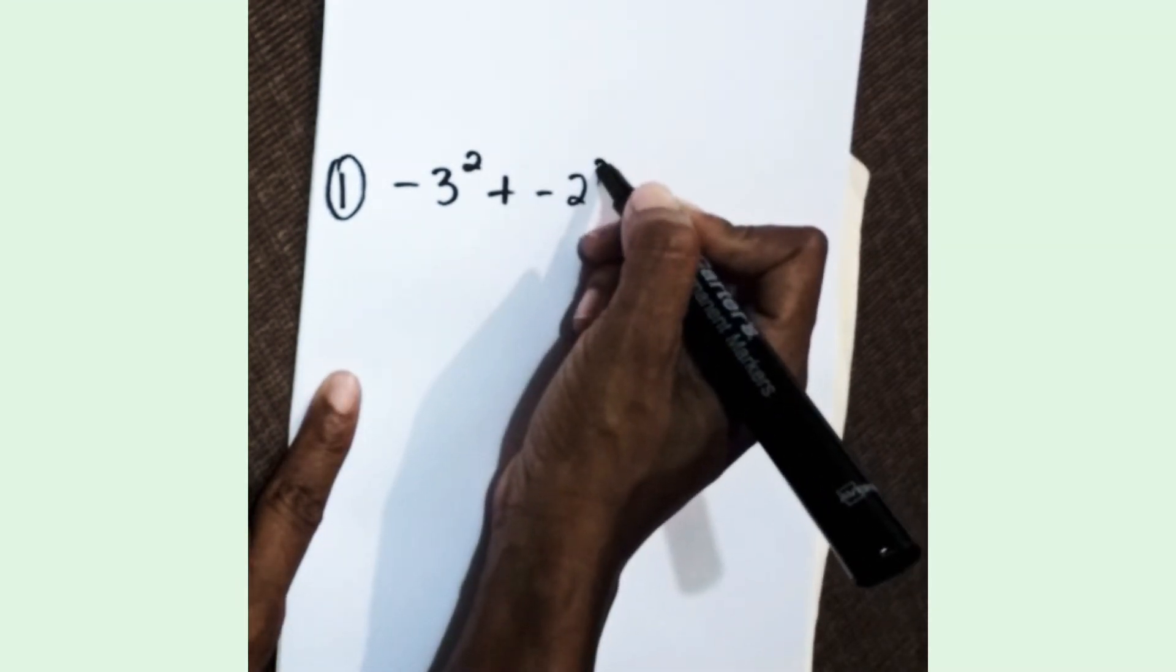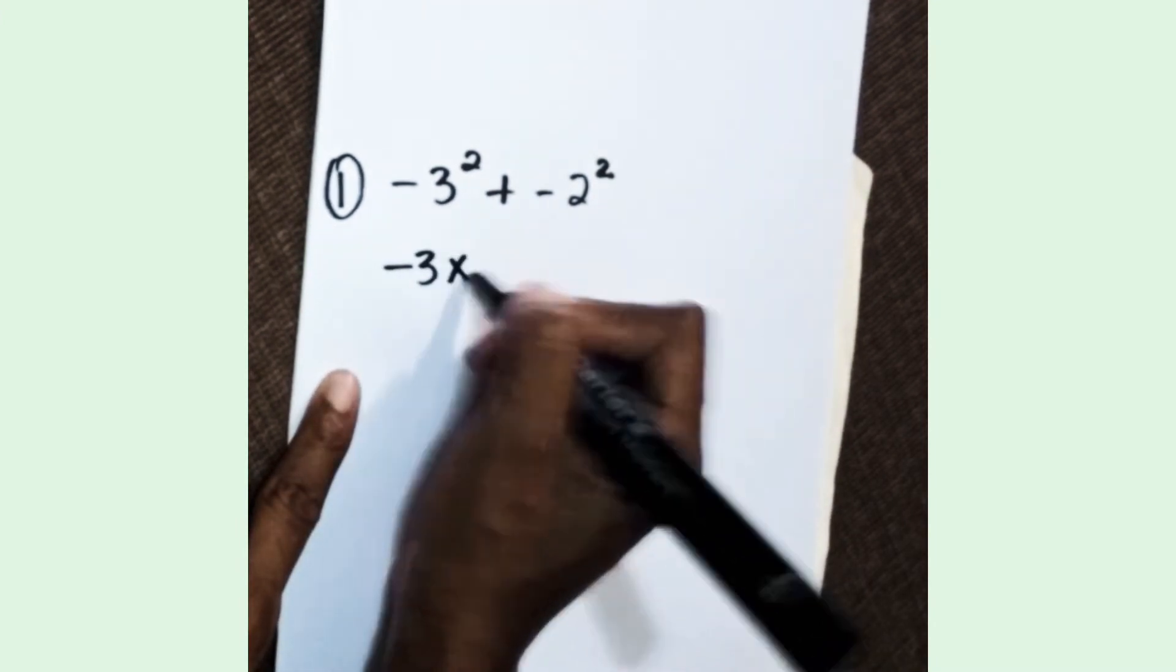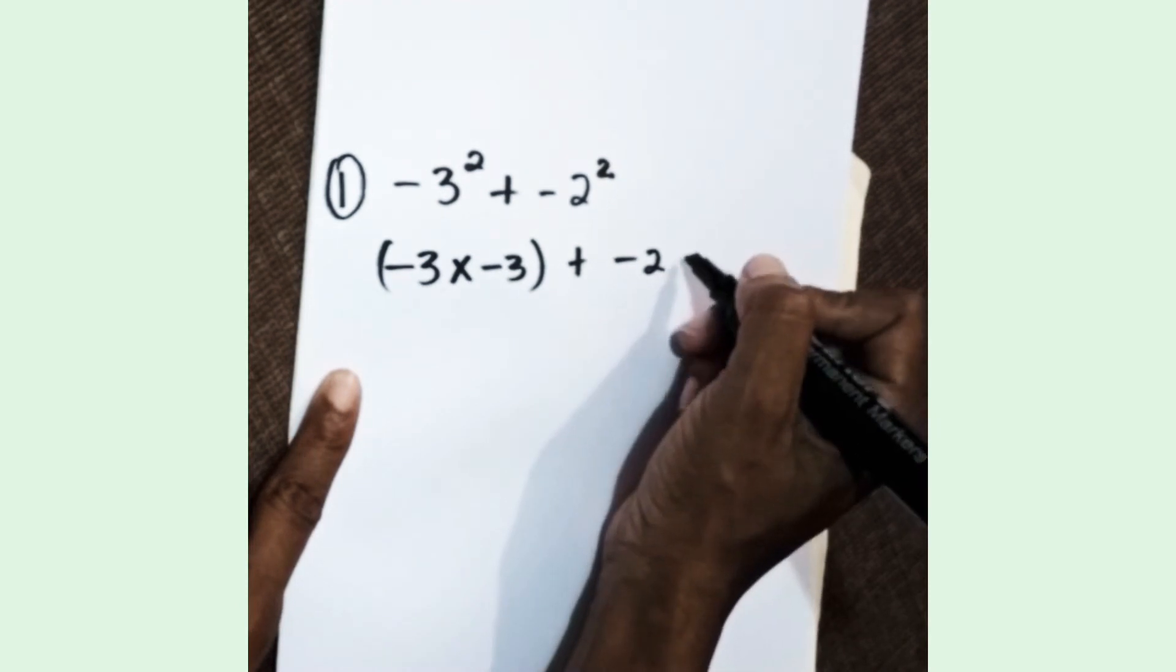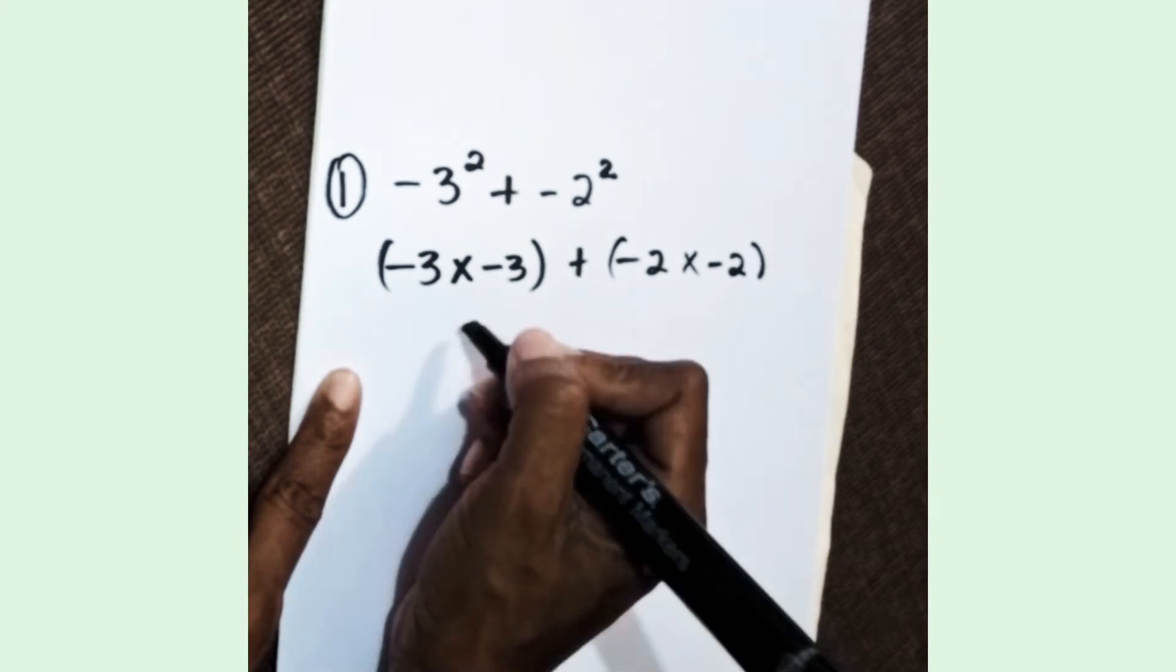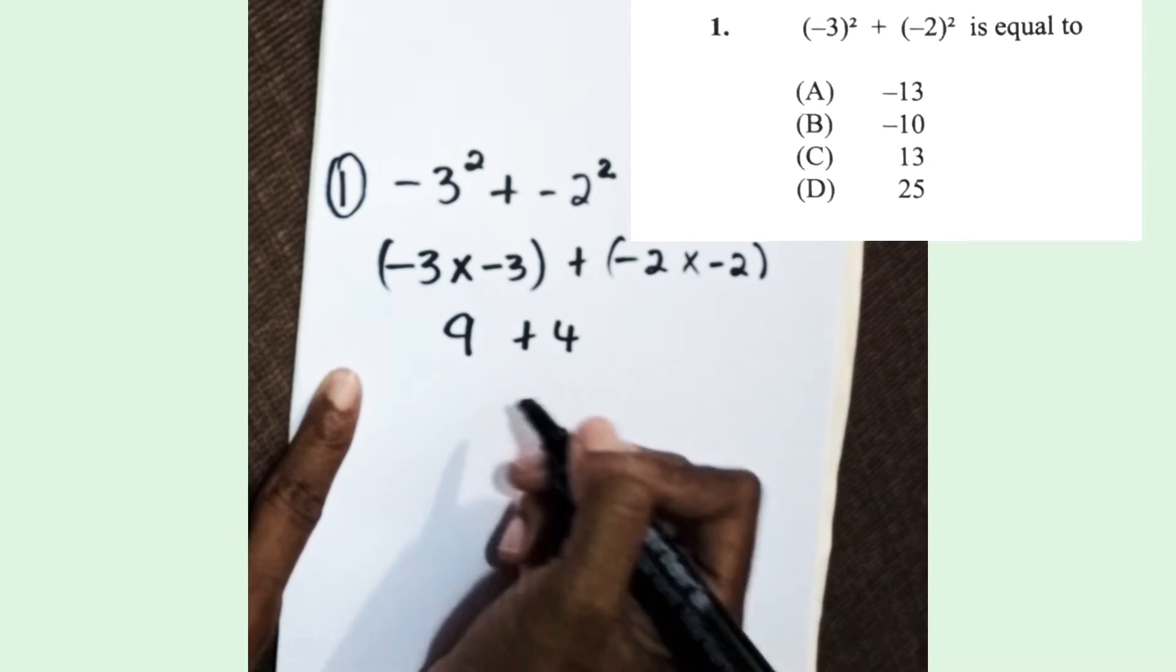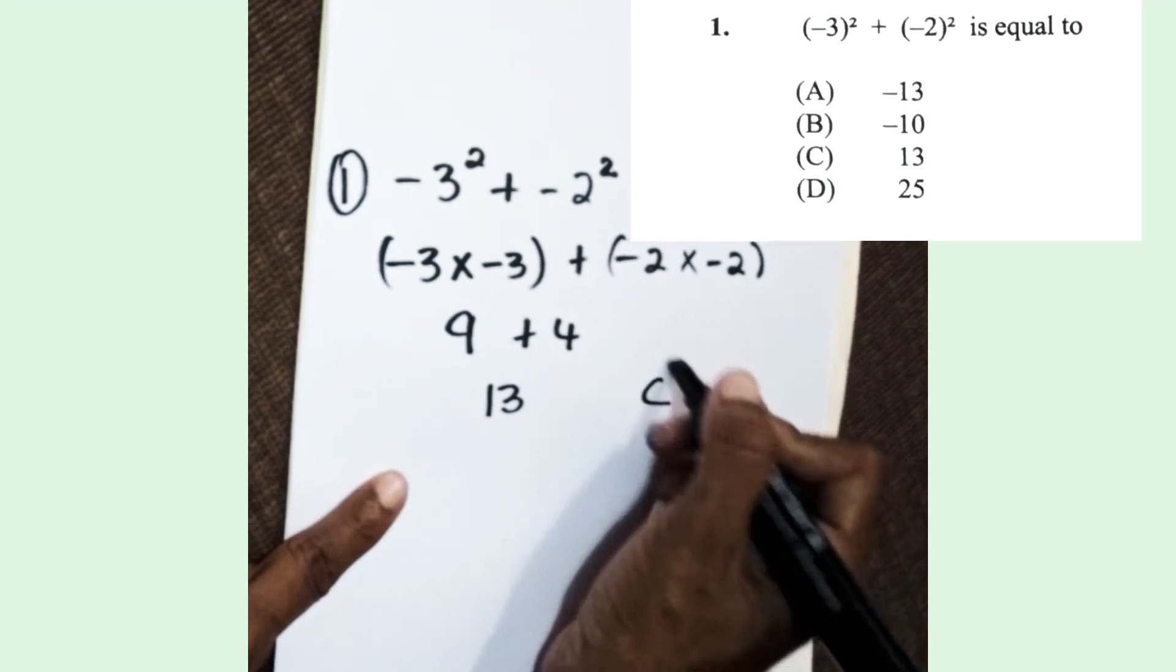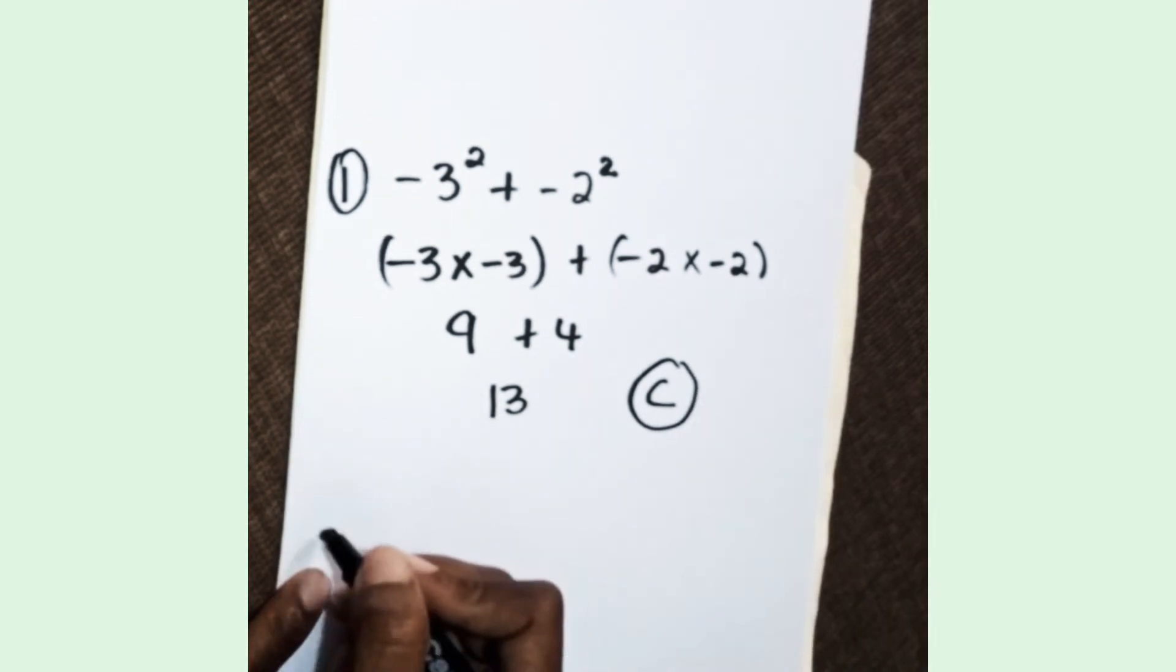First, please read the question at least two times. Now remember, whenever you raise a negative integer to an even power, the result is going to be positive. So negative three times negative three gives you positive nine, and negative two times negative two gives you positive four. So your answer is C.